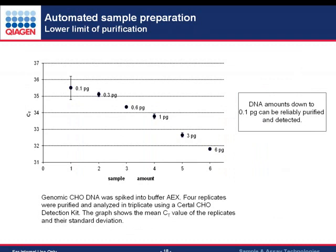For the lower limit of purification, we went below 1 picogram down to 0.1 picogram of CHO genomic DNA. At 0.1 picogram, we still see CT values in a reasonable range of 35–36, but variation increases. Therefore, we determined the lower limit of purification to be around 0.1 picogram; however, to reliably quantify CHO DNA, we recommend not going below 1 picogram.